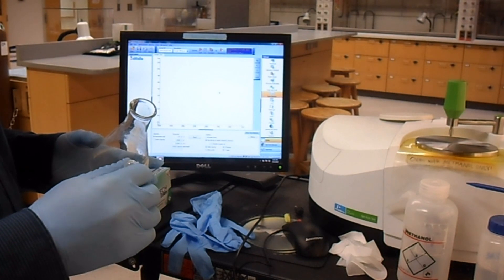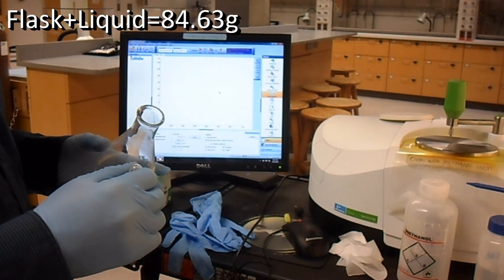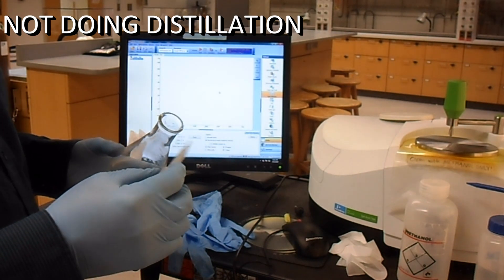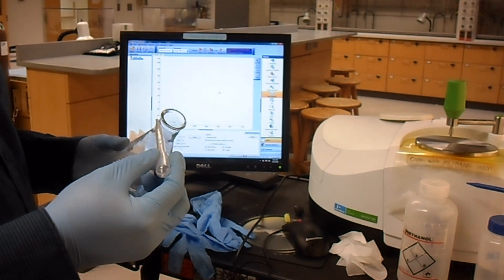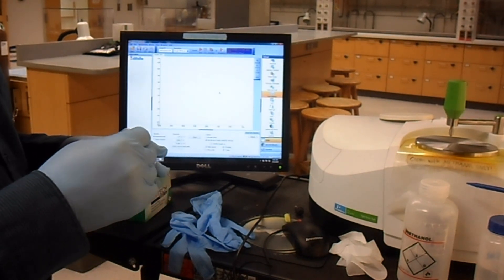So at this point, we're going to take a weight of our liquid. So we've weighed our flask. Our flask weight with the liquid in it is 84.63 grams. We are not doing the distillation. We are not doing the purification part of the procedure, but we are going to do the IR. So we're going to take an IR spectrum for you.